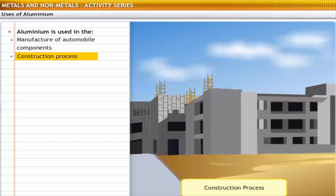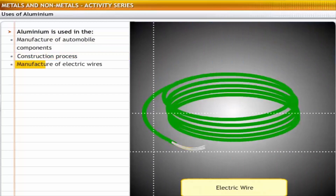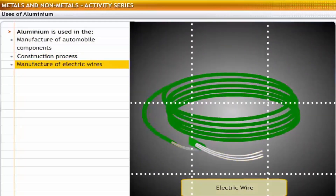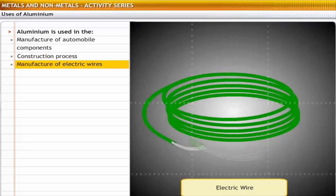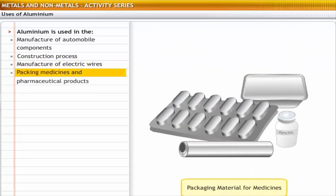Aluminium is used in the construction process due to its high tensile strength, in the manufacture of electric wires due to its high conductivity, and for the packing of medicines and pharmaceutical products due to its malleable nature.